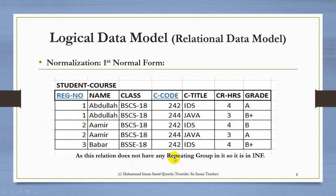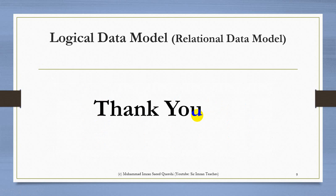To revise: if a table has multi-valued attributes or a repeating group, we make a composite primary key so that we get a unique value for each attribute. If the composite key works and there is no repeating group, the table is in First Normal Form. In the next class we will meet with the Second Normal Form. Thank you very much.